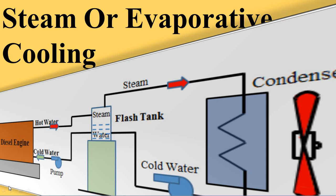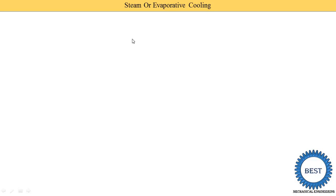In this video, I explain the steam or evaporative cooling system for an IC engine. First, we understand the meaning of evaporative. Evaporative means it is the process in which liquid is converted into a vapor phase.